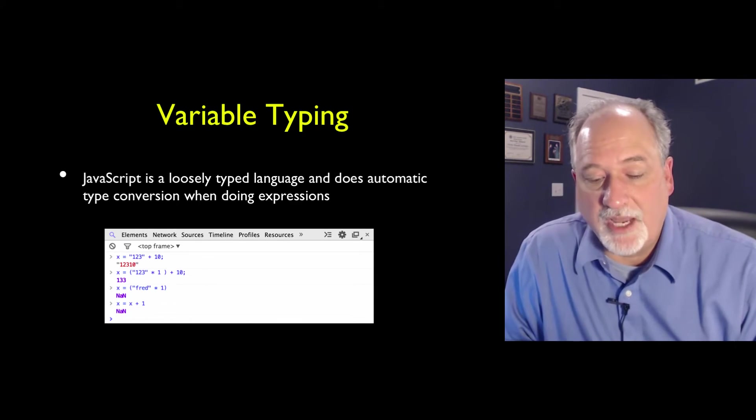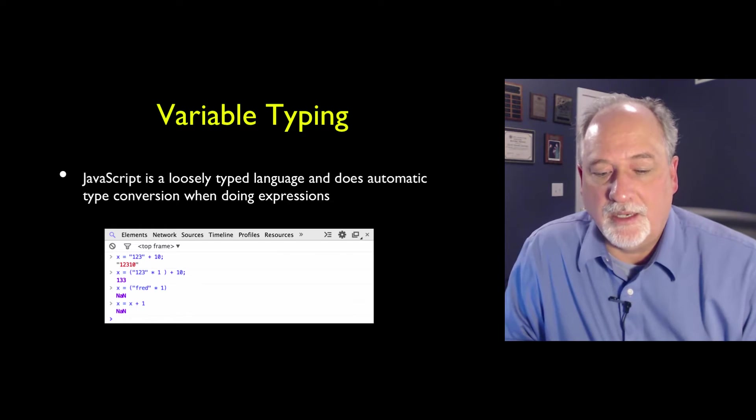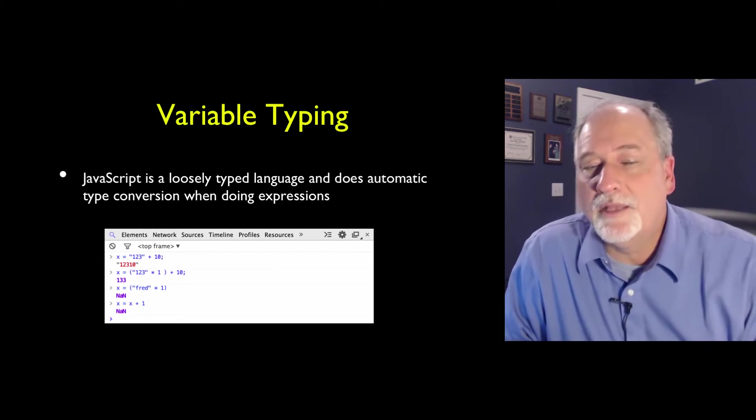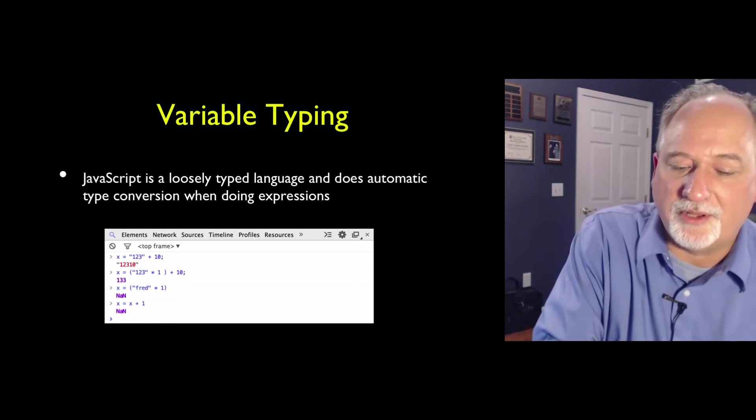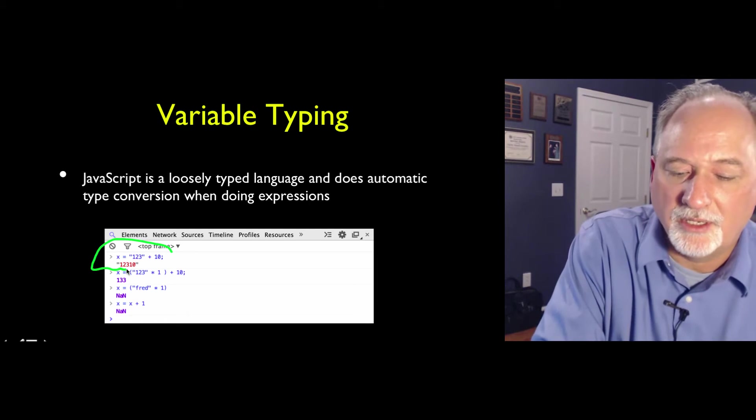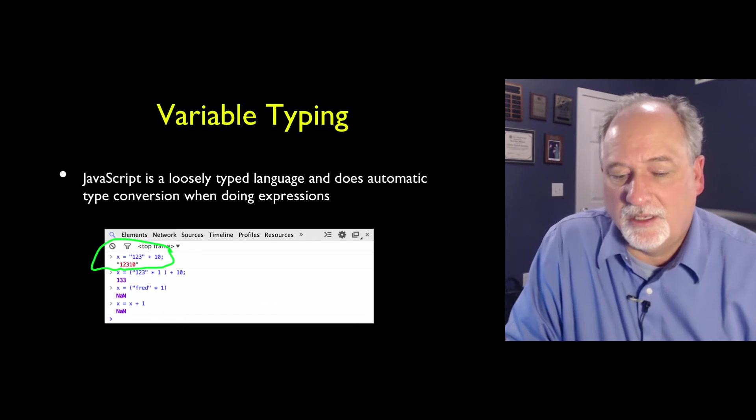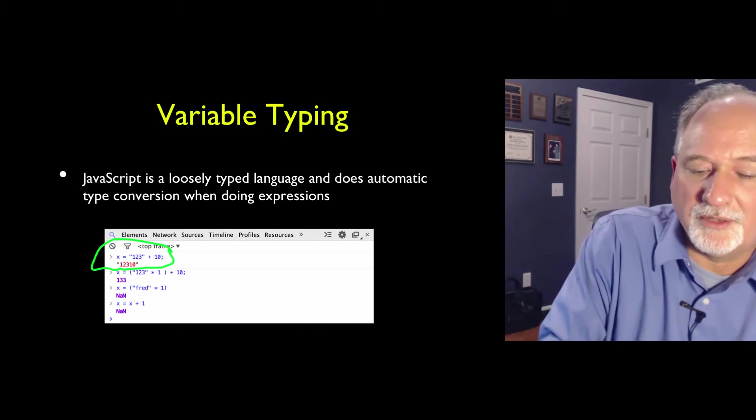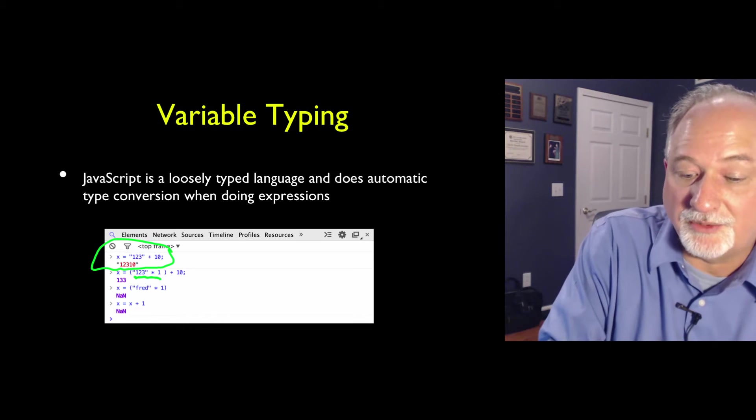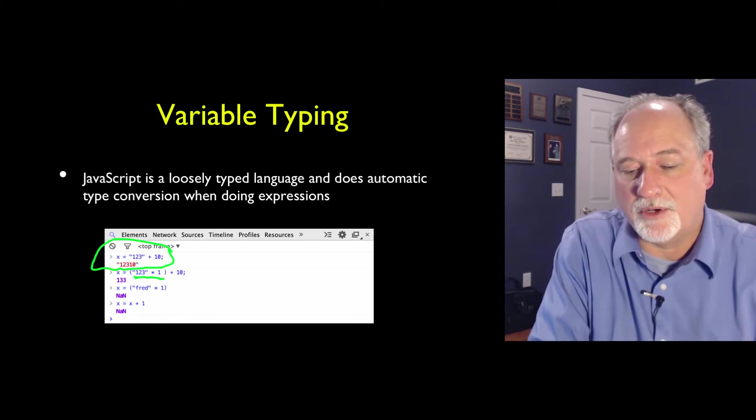Variables, of course, have types. It is a little counterintuitive. For example, here we're adding a string and a number. In PHP, we would expect that to be a number, but in JavaScript, it's a string. Here, we're doing a multiplication. So that's going to turn that into a number and then add 10 to it. So we get a number.